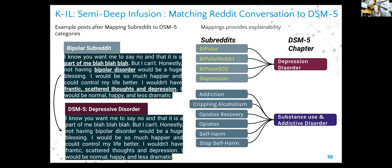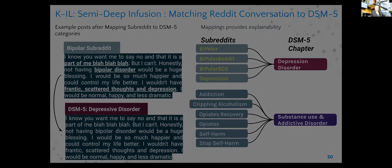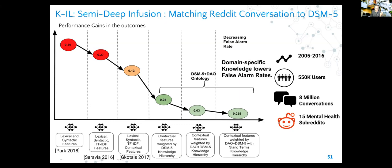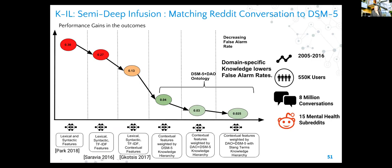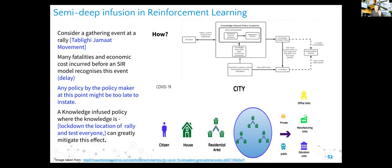Here is a very interesting graph: on the left-hand side the false negative rate is 0.3 using only lexical and syntactic features. Then you add more features like TF-IDF, then contextual features. Then you add DSM-5 - you can see a big jump from 0.13 down to 0.04. Then you add the drug abuse ontology, which gives some more improvement. Then you add slang terms and other things for a little more improvement. You can see how you improve, and I do not think this kind of improvement will come just by throwing more data at the problem.